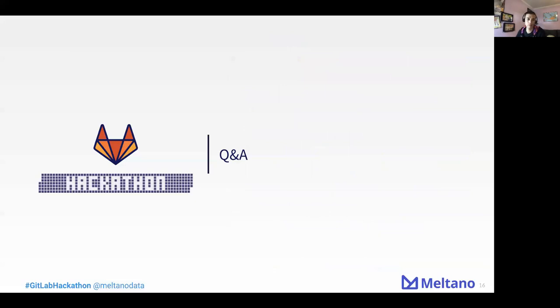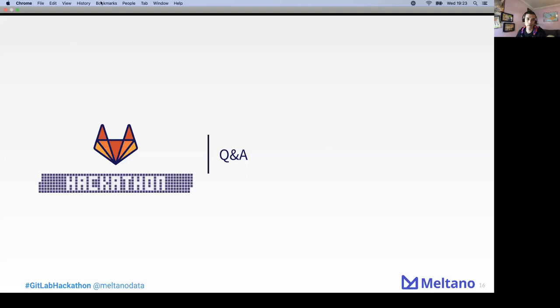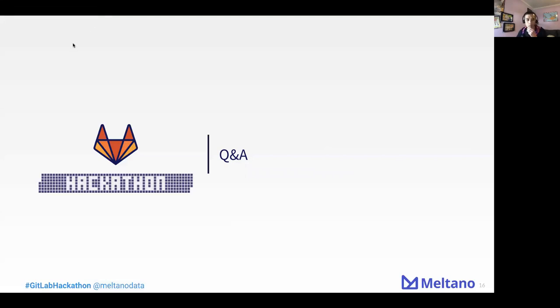If people have any questions, feel free to type them in the chat or ask verbally. One question: Meltano doesn't follow the normal release cycle of the rest of GitLab — can you tell us about the release cycle? At the moment, because we are at such an early stage, we iterate very fast. We have one milestone per week, starting with targets and iterating weekly. That shows how fast we move and also means there are small things for everyone to jump in and help with.